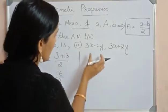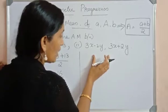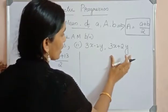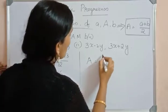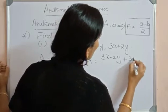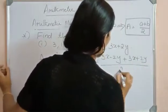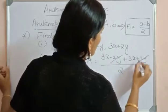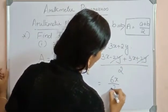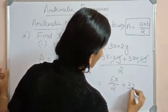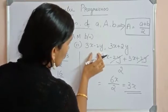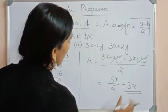Consider the second question: find the arithmetic mean between 3x minus 2y and 3x plus 2y. Applying the same formula, A equals (3x − 2y + 3x + 2y) / 2. The minus 2y and plus 2y cancel, giving 6x / 2, which equals 3x. Therefore, the arithmetic mean between 3x − 2y and 3x + 2y is 3x.